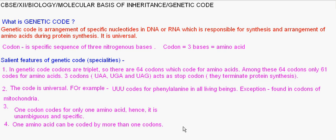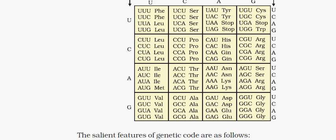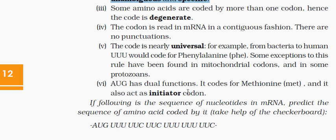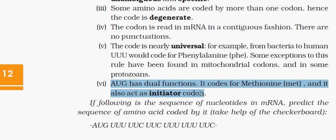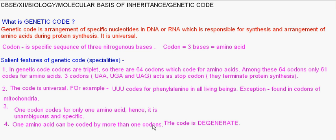Now one more point I'll discuss, that is AUG has dual functions. It codes for methionine as well as it acts as initiator codon. So both terminator codon and initiator codon or stop codon, these are applicable for translation means protein synthesis. So AUG has dual role. When there is AUG it can either initiate the process of protein synthesis or it can add methionine.